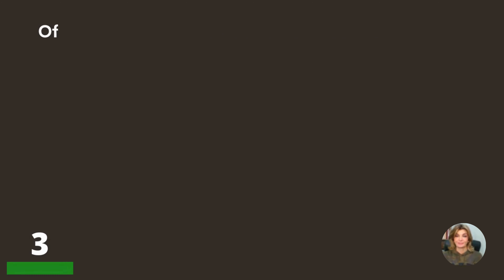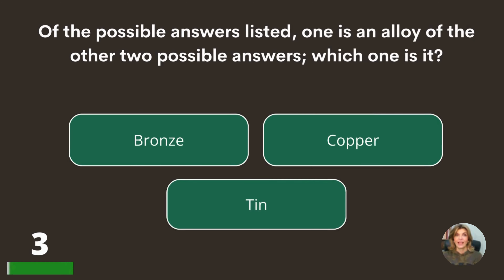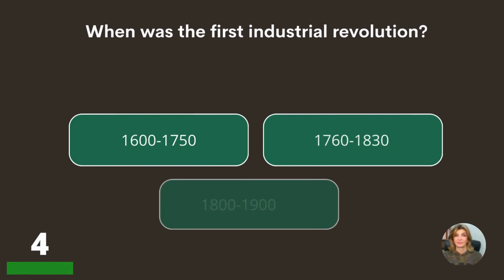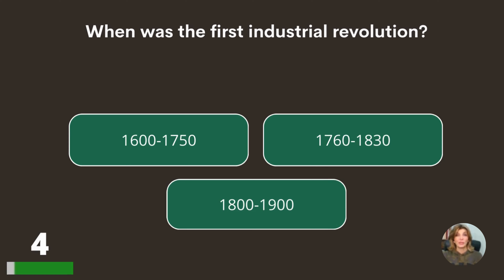Of the possible answers listed, one is an alloy of the other two possible answers. Which one is it — bronze, copper, or tin? Bronze. When was the first industrial revolution — 1600 to 1750, 1760 to 1830, or 1800 to 1900?